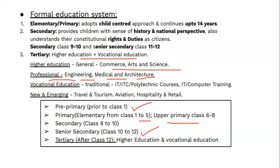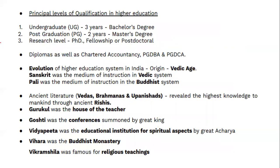Summarizing the education structure: pre-primary is prior to Class 1, primary is up to Class 5, upper primary is Classes 6 to 8, secondary is Classes 8 to 10, senior secondary is Classes 10 to 12, and tertiary includes higher education plus vocational education. You can get match-the-following questions from this. The principal levels of education are: undergraduate (three years), postgraduation or master's degree (two years), research-level PhD, fellowship or post-doctoral, and diplomas including chartered accountancy as certifications.